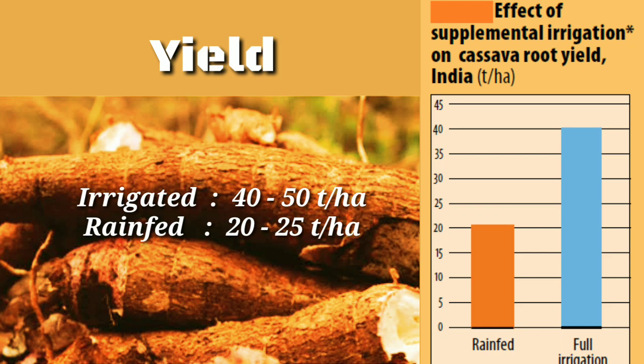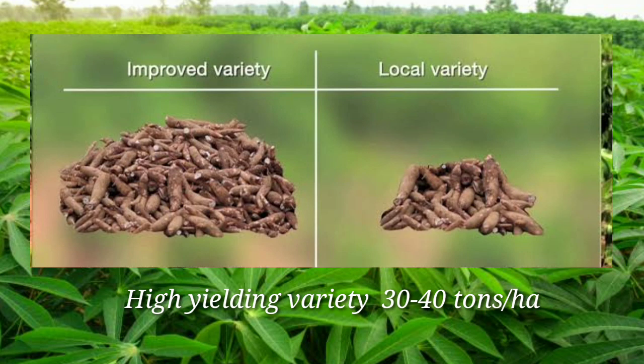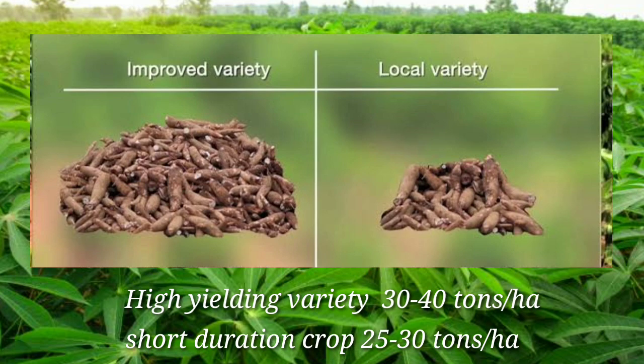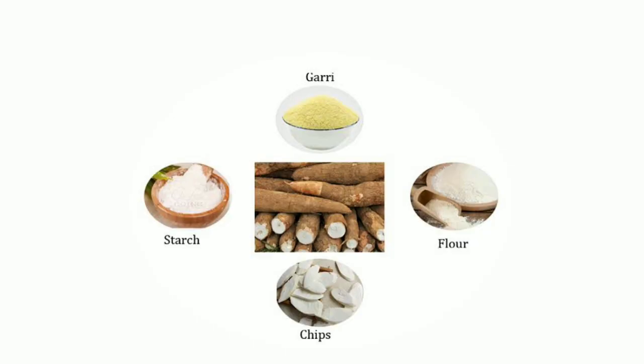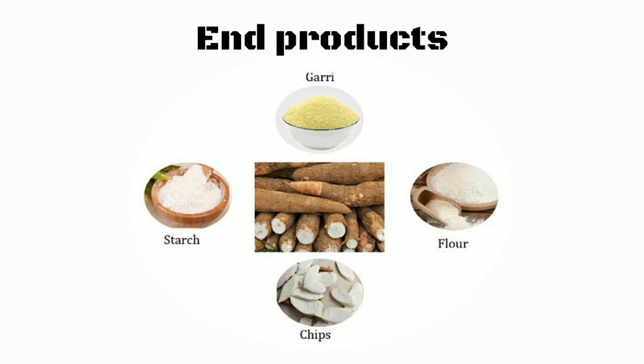Yield depends on various factors like farm management, climatic conditions, and the cultivar chosen. As shown in the chart, cassava root yield is higher under full irrigation compared to rain-fed conditions. For high-yielding varieties, the yield is around 30 to 40 tons per hectare; for short-duration crops, the yield is 25 to 30 tons per hectare. Starch is extracted from the roots of the cassava plant in powder form. Cassava starch flour, gari, and cassava chips are the main end products of cassava roots.